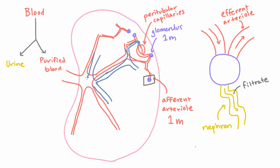And these bigger vessels eventually join and become the renal vein and leave the kidney.